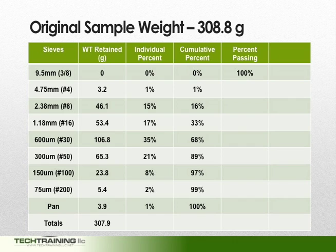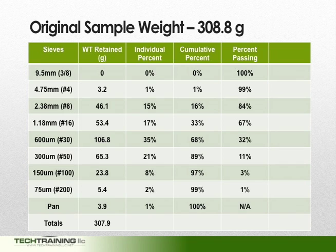We can now calculate our percent passing. Percent passing is achieved by simply subtracting from 100 the cumulative percent retained. For example, if 0% were retained on the 9.5mm sieve, then 100% of the material must have passed. If 1% were retained on the 4.75mm sieve, then 99% must have passed. And cumulatively, if 16% were retained on the 2.36mm sieve, then 84% must have passed.